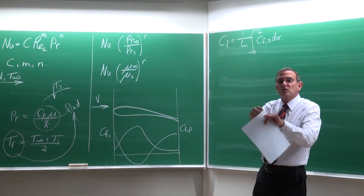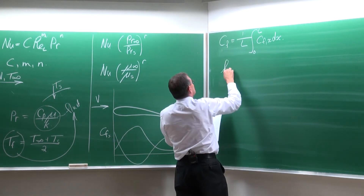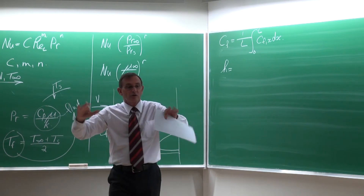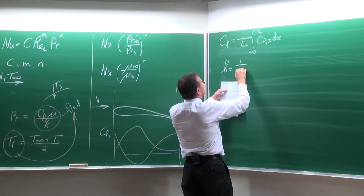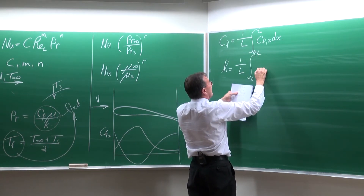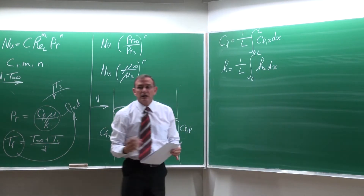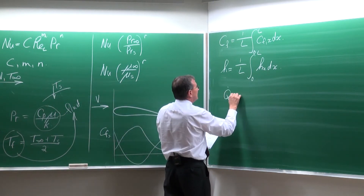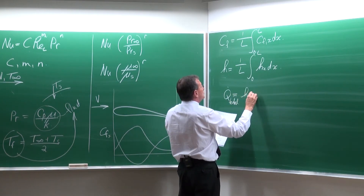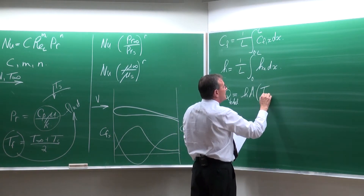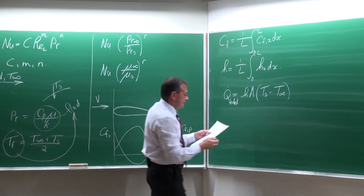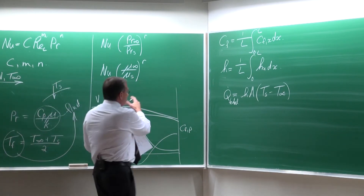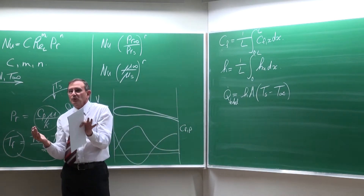Once you've done the integration you end up with one value for a specific geometry. The same is done in heat transfer: the heat transfer coefficient varies over the object, and the average is determined by integrating from 0 to L of the local values dx. Once we have the average heat transfer coefficient, we can get the total heat transfer rate: Q = h̄ × A × (Ts − T∞).